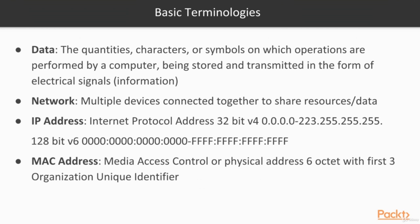A network is multiple devices connected together to share resources or data. A great example of a network is the internet, which is made of many devices connected together to share data. An IP Address stands for Internet Protocol Address. Version 4 is 32 bits with 4 octets starting at 0.0.0.0 all the way up to 255.255.255.255. Since so many devices have started connecting to the internet, people were worried we were going to run out of addresses, so a new standard was born: the 128-bit version 6.